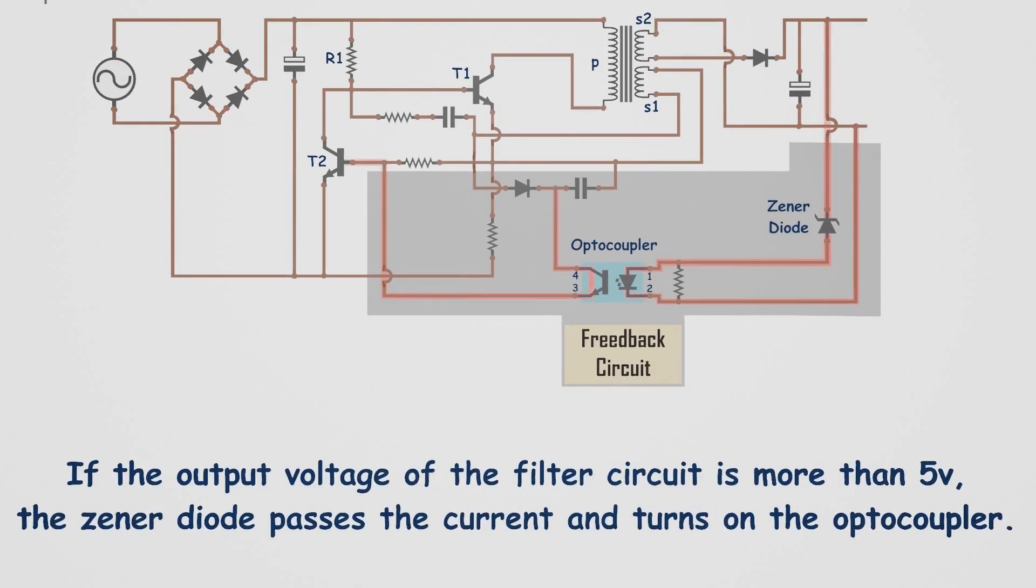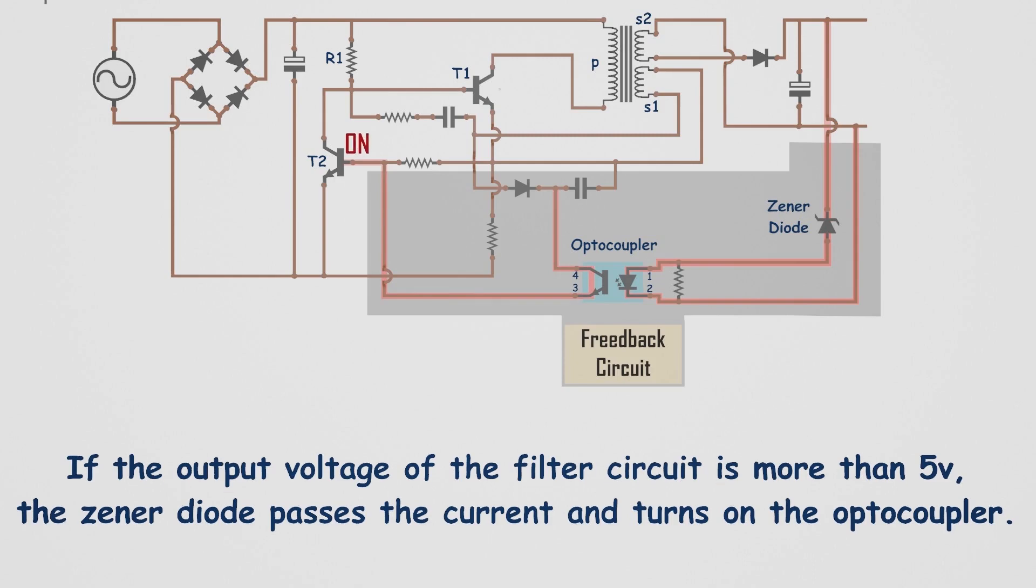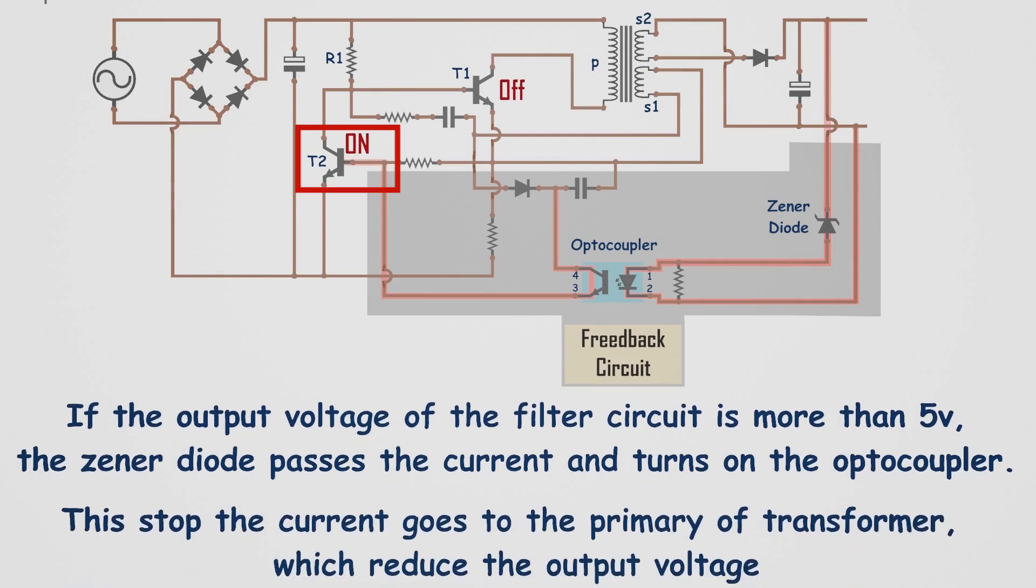If the output voltage of the filter circuit is more than 5 volts, the zener diode passes the current and turns on the optocoupler. Then, it passes the current to the base of T2 and makes it turn on. This again turns off the T1 and stops the current going to the primary of the transformer, which reduces the output voltage.